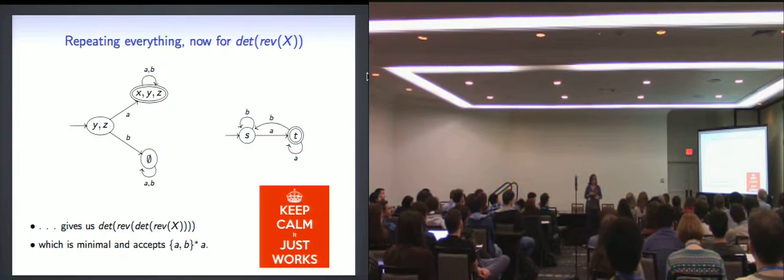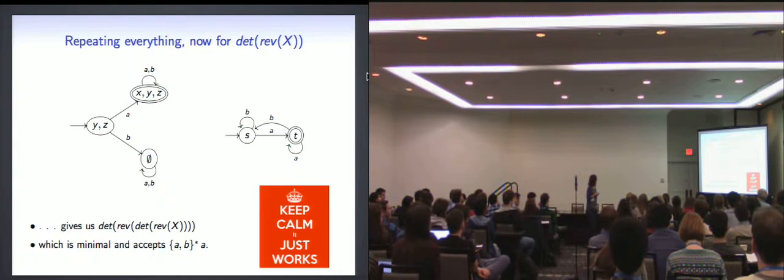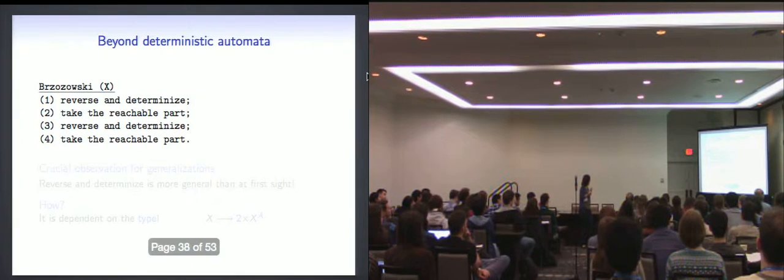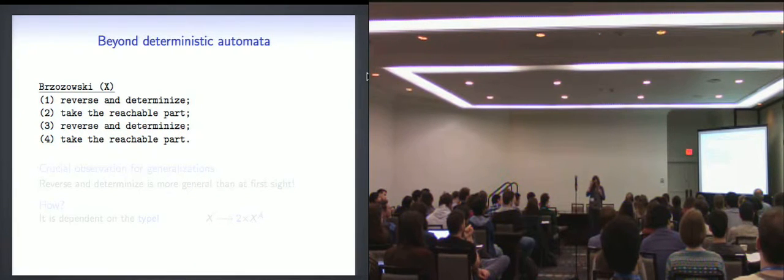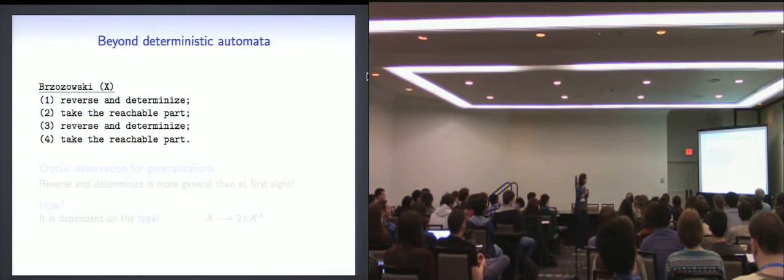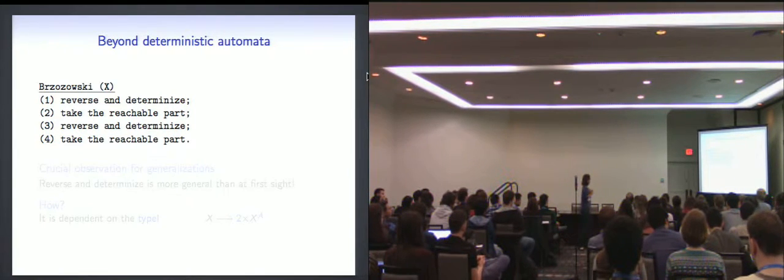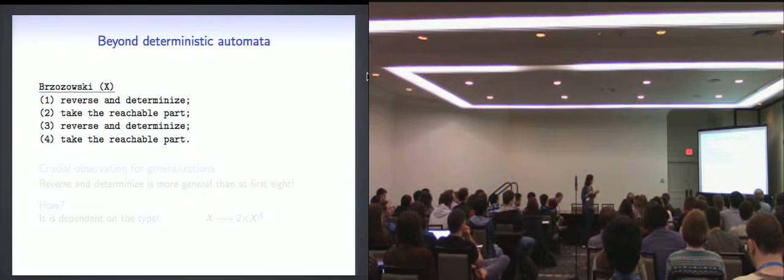So it just works. It's like, it's a really nice, really nice algorithm. But now the question one might ask is, is this very specific to deterministic automaton? And actually it's not. So Brzozowski in the original paper already observed this works for non-deterministic automaton. But how about other types of automaton like weighted automaton or probabilistic automaton? Does this also work? And how? How? I mean, what is in this algorithm? What is specific to the deterministic automaton and what is more general?